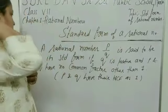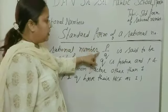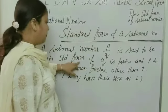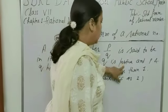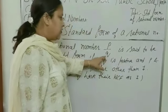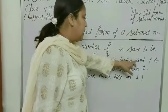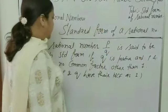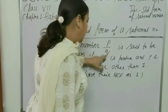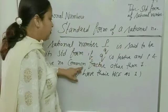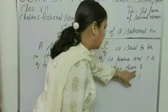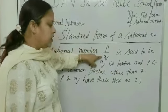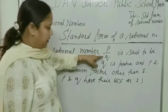To repeat: a Rational Number P upon Q is said to be in its Standard Form if Q is positive — meaning the denominator is positive — and P and Q, meaning the numerator and denominator, have no common factor other than 1, meaning P and Q have their HCF as 1.